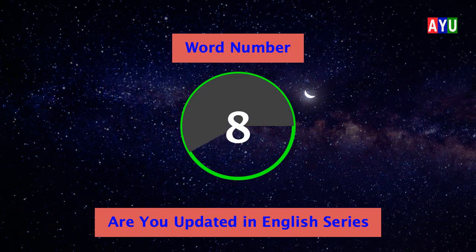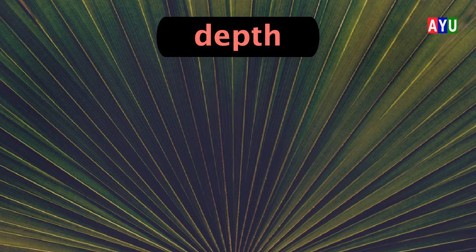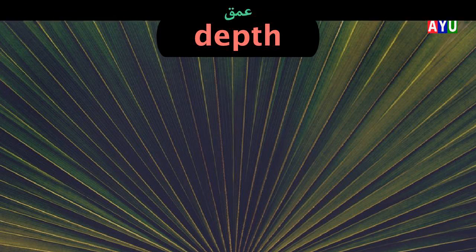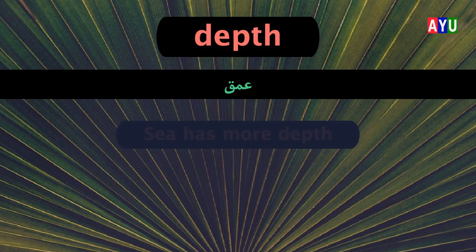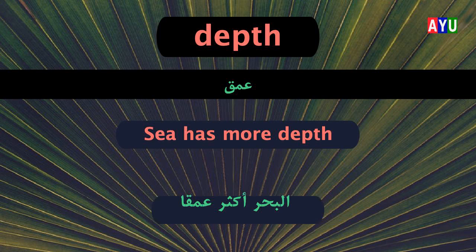Eighth word: Depth. Depth means عُمْقٌ. Let's see one example. Sea has more depth. الْبَحْرُ أَكْثَرُ عُمْقًا.